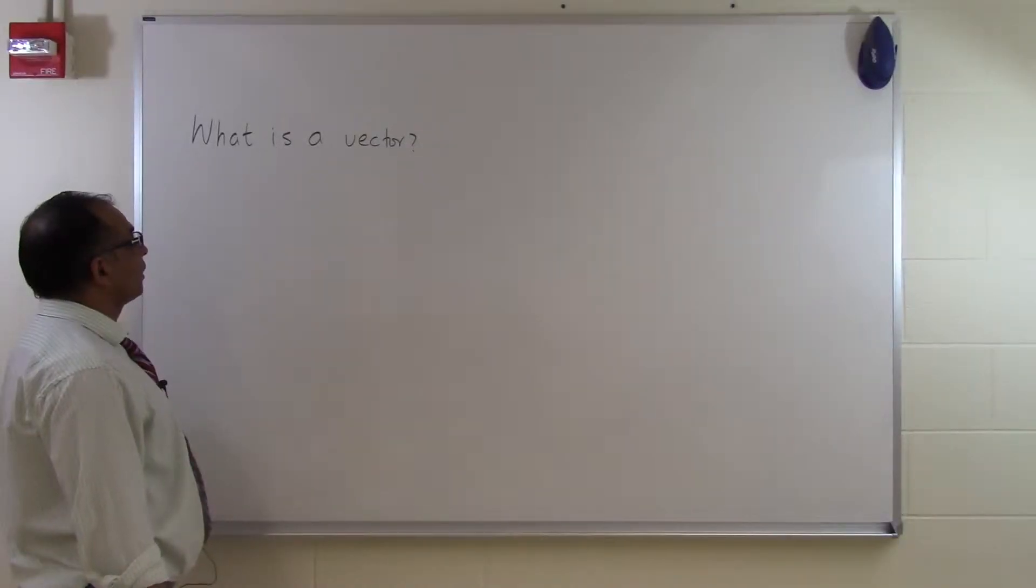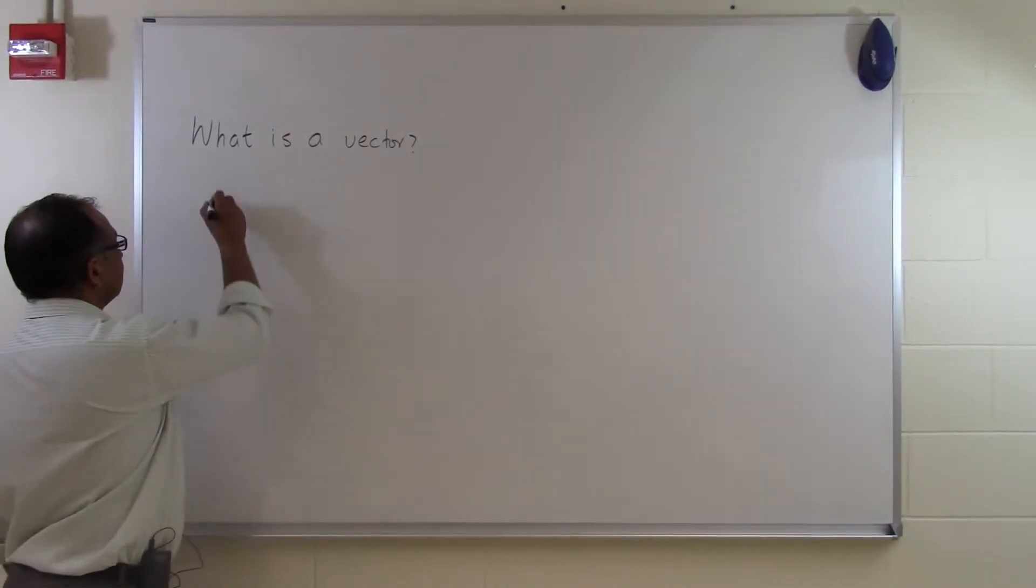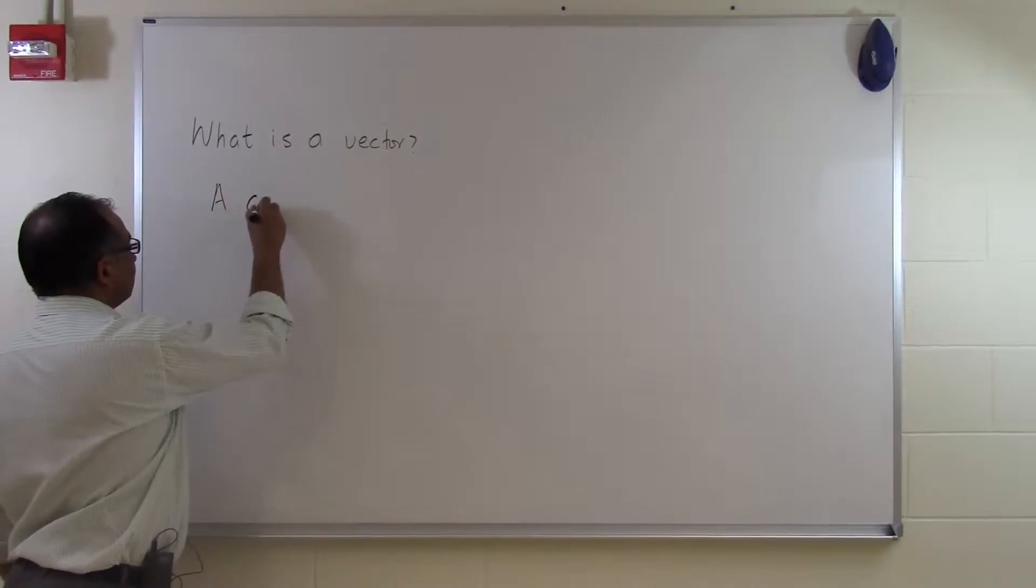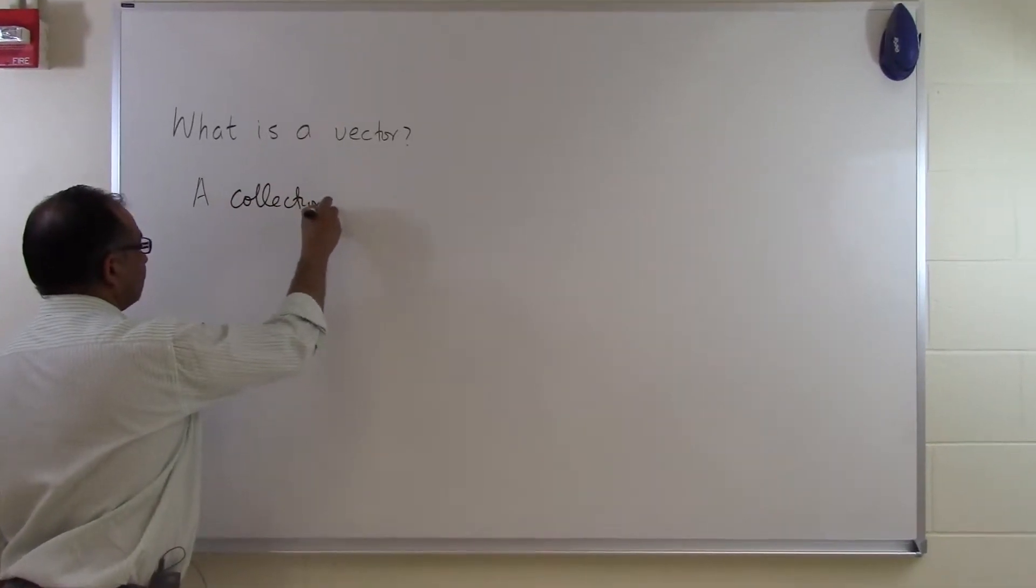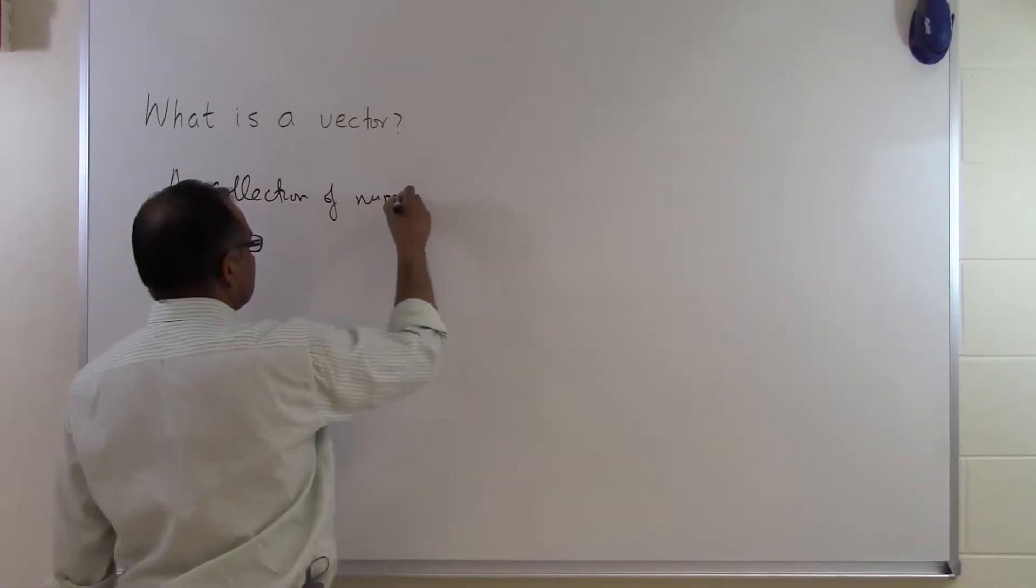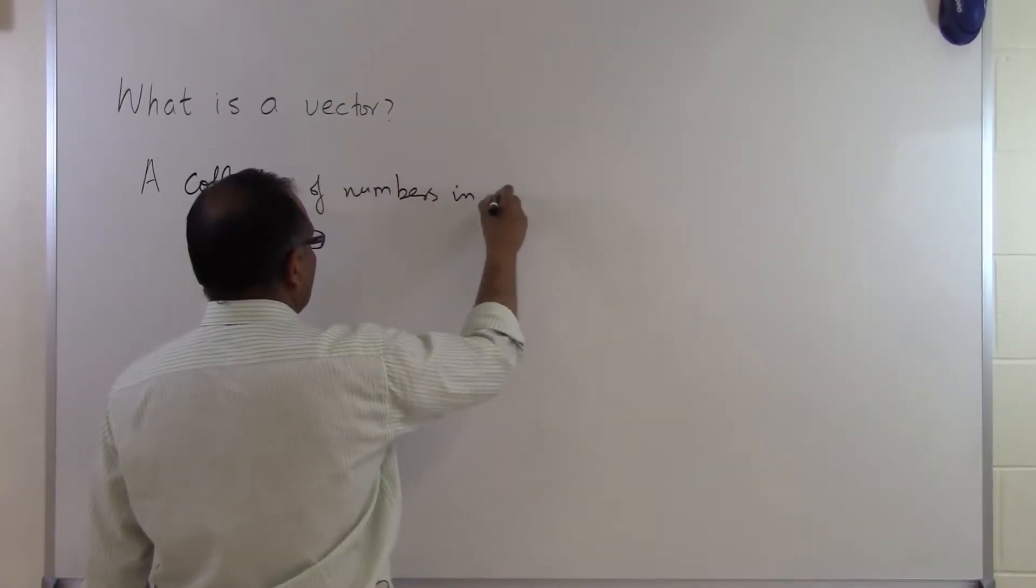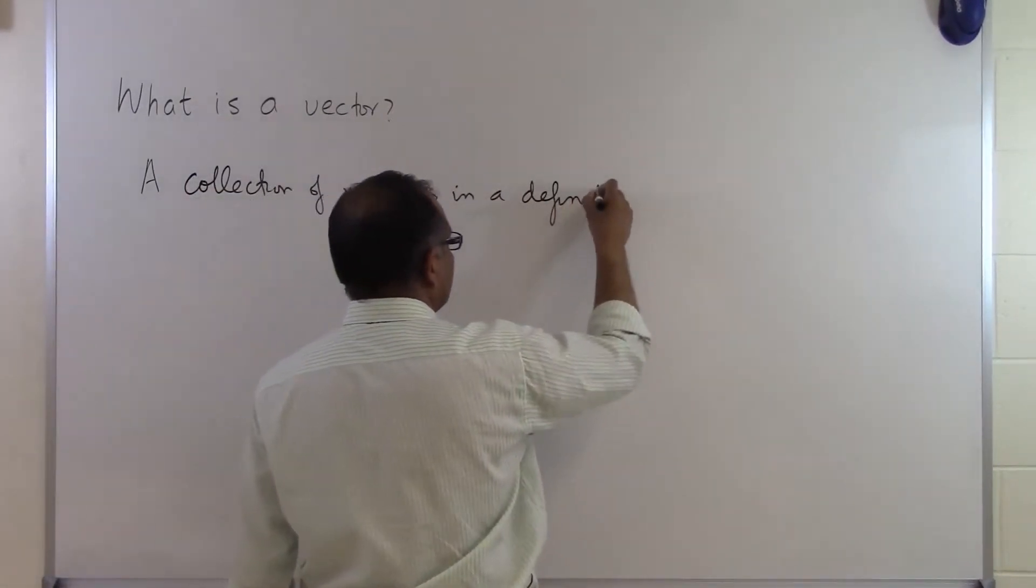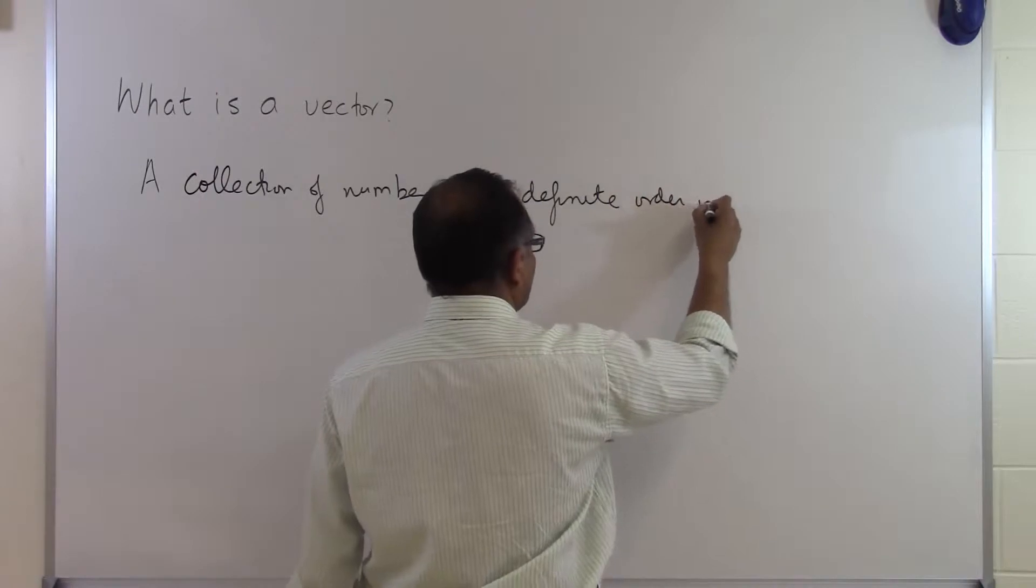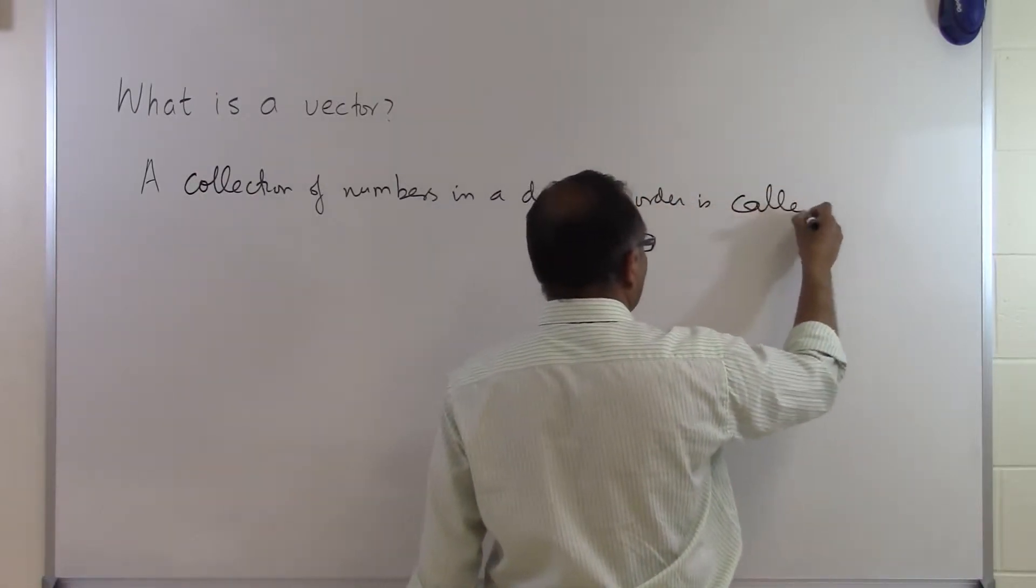In this segment we will talk about how we define a vector. A collection of numbers in a definite order is called a vector.